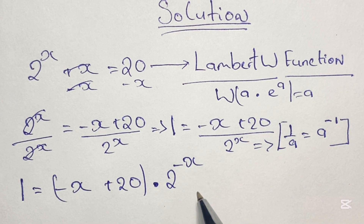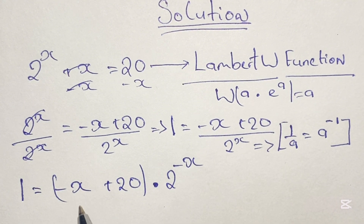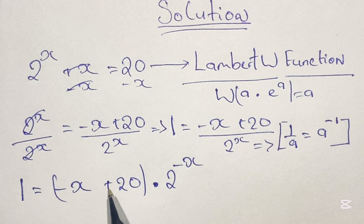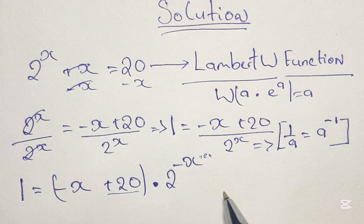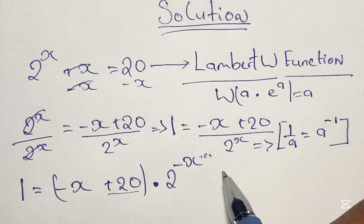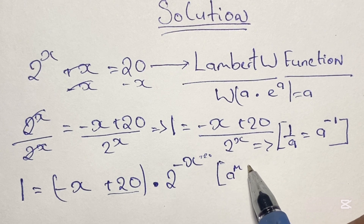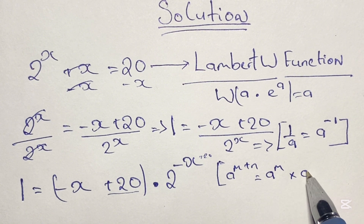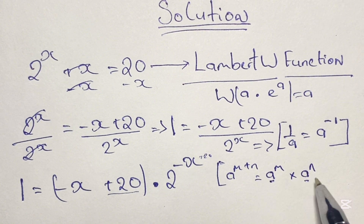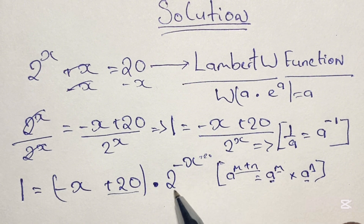Now as we are writing our equation in the form of a times e to the power of a, we can see a negative x here and a negative x in the power. But we also have a plus 20 here, so that means we need a plus 20 in the power as well. We achieve this by using the law of indices: a to the power of m plus n is equal to a to the power of m times a to the power of n, where we see the same base, and simply add the powers.